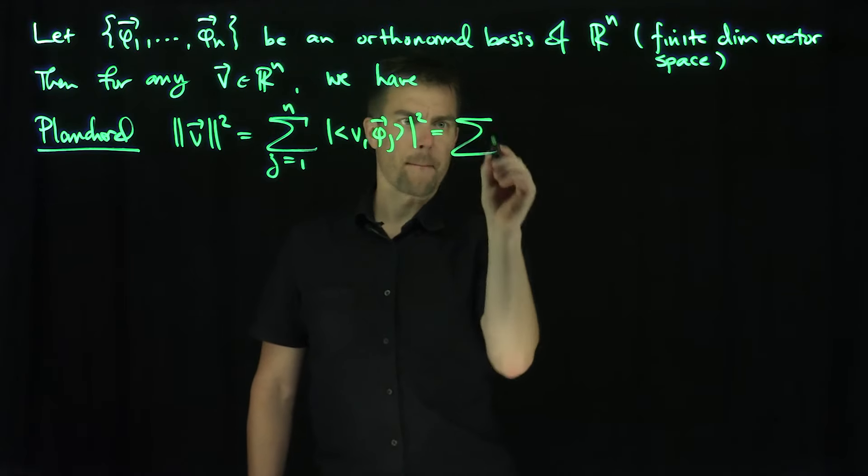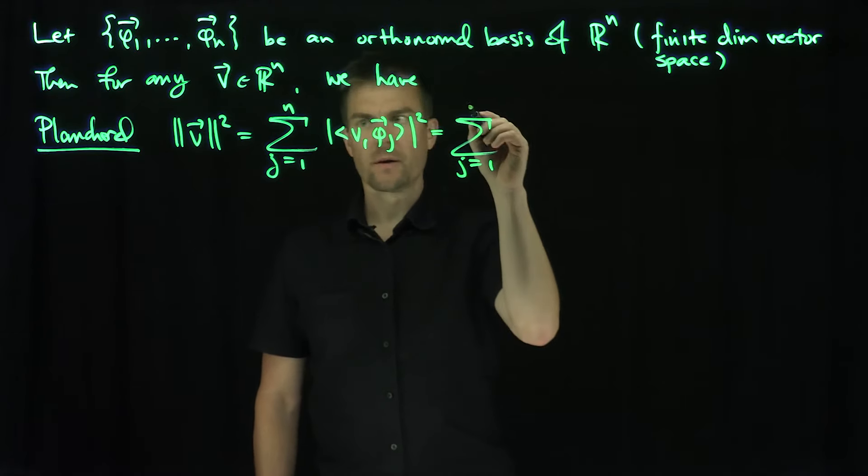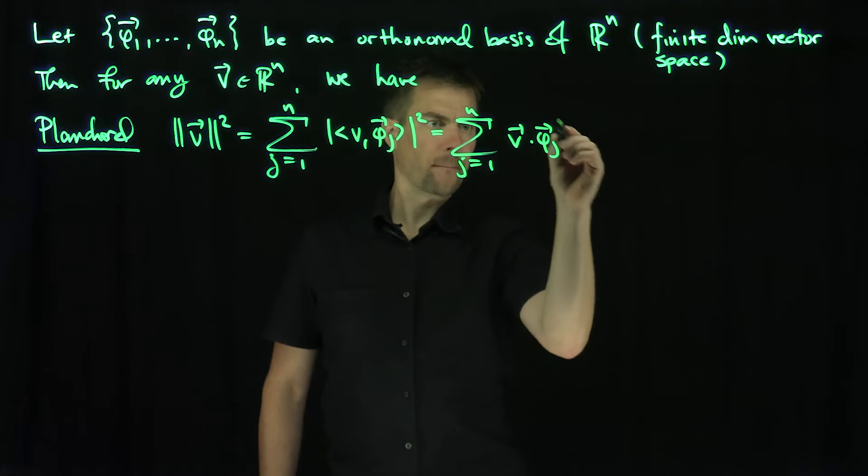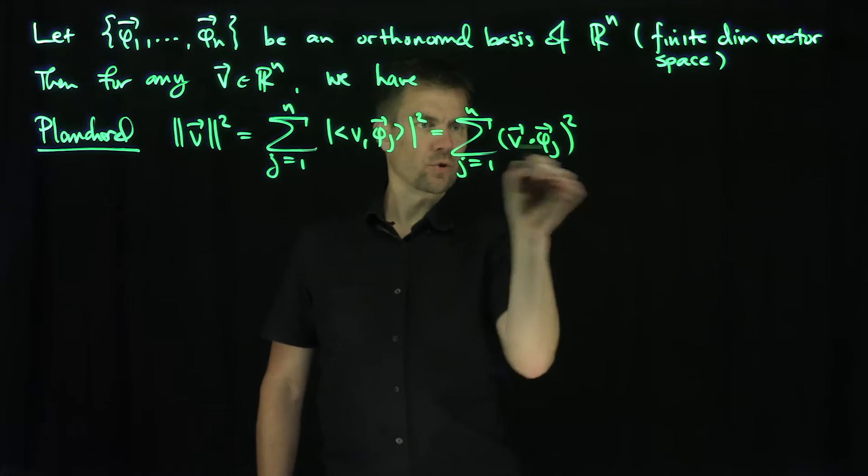Of course, that's just the dot product. So this is just the sum from j equals 1 up to n of v dot phi_j, quantity squared. So this is true in R^n.